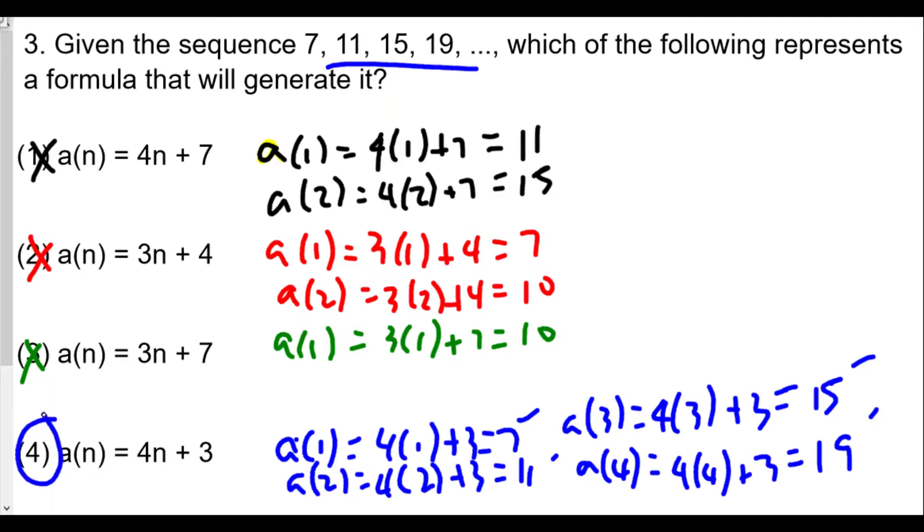One other thing to look at is that we notice the increase is each time we're increasing by 4 every single time. It's almost like a linear function. All these are linear functions. Every time we increase the term by 1, we're increasing the actual value of the term by 4, so a slope of 4. One way to look at it is that it couldn't be choices 2 and 3 because they don't have the slope of 4. Only 1 and 4 have it, so it could be this one or this one, and you can test out and see.